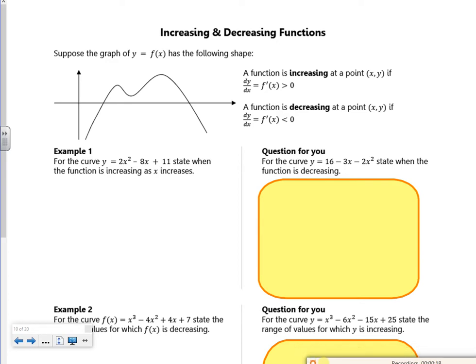It is what it sounds like. If my graph is going up, it's increasing. My gradient is greater than zero. If the graph is going down, it's decreasing. My gradient is less than zero. So increasing is where the gradient is bigger than zero. Decreasing is where it's less than zero.